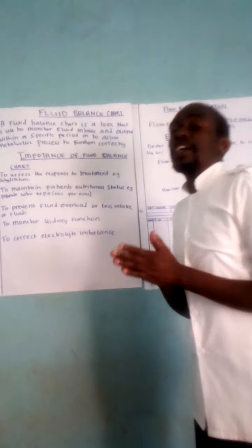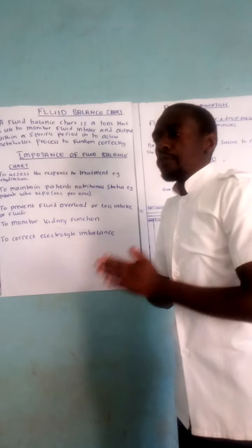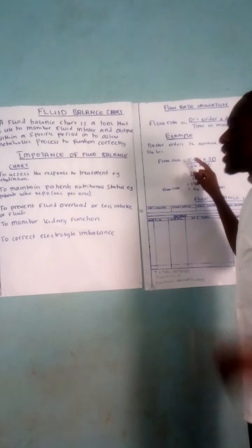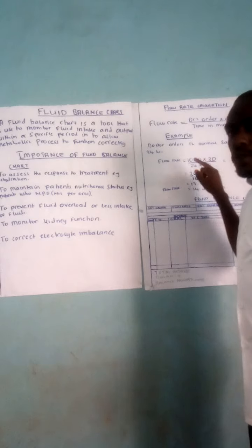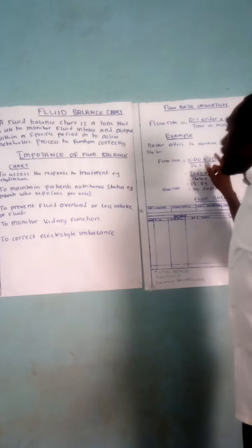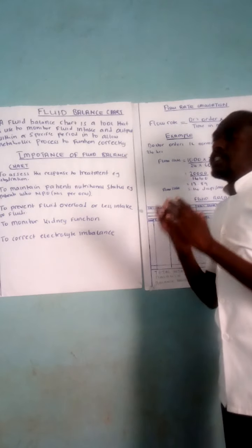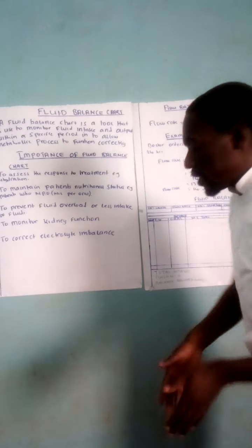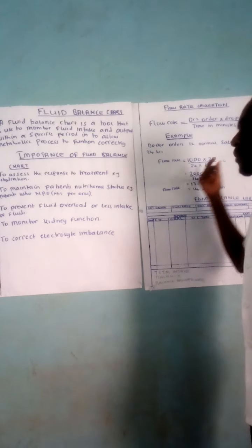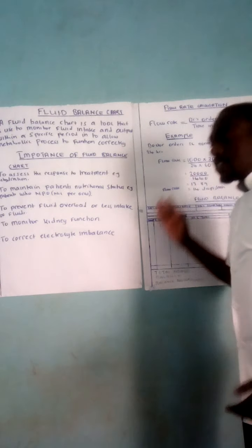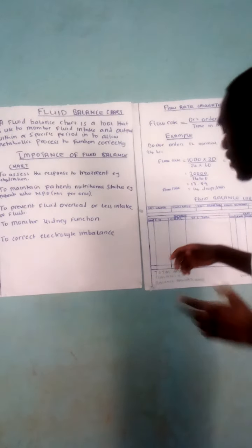For example, one liter of normal saline has been prescribed to be given in 24 hours — at which flow rate is it going to run? Flow rate equals one liter, but we convert it to milliliters, so 1,000 mL, times the drop factor. The giving set has a drop factor of 20, divided by the time in minutes: 24 hours times 60 minutes.